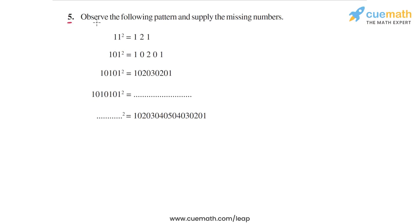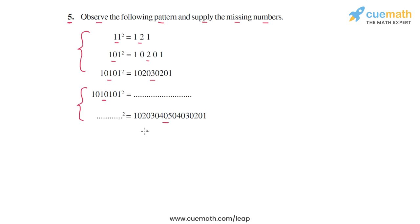In question 5, the problem says: observe the following pattern and supply the missing numbers. We are given 11² = 121, 101² = 10201, and 10101² = 102030201. Looking at the pattern in this sequence of squares, we have to complete the remaining statements: find 1010101², and figure out what number has a given square value. To do that, we need to analyze the pattern in the first three squares.